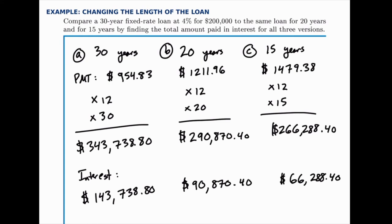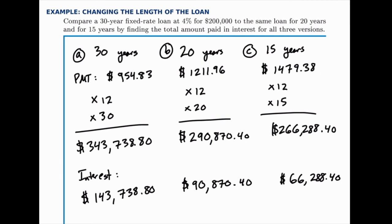Notice how dramatically the interest drops off — in the last case, you're paying less than half as much interest as in the first case. Because there's so much less time for the money to accrue interest, you end up paying dramatically less. The trade-off, of course, is that your monthly payment is much higher, so you have to budget for what you can afford. But just know that if you take a shorter loan, you'll end up saving money in the long term, if that's feasible for you.